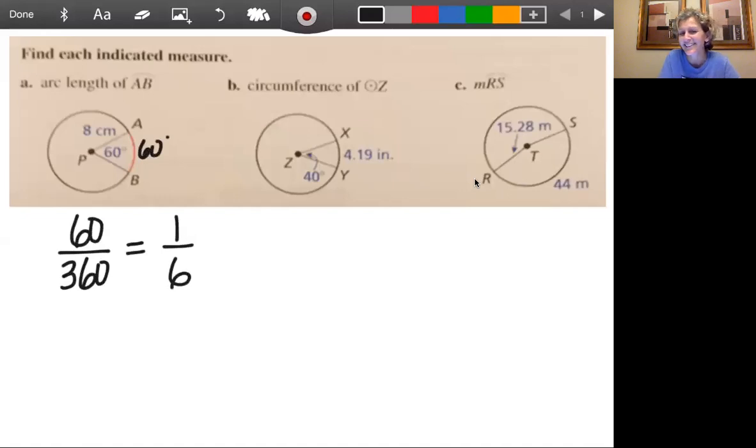Remember we talked about pizza? This piece of crust from A to B would be one-sixth of the whole pizza. And how much is the whole circumference? Well, that's pi D.